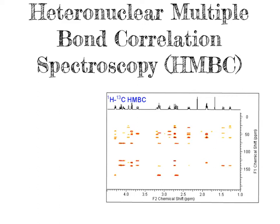In the last couple of videos, we focused on introducing 2D NMR experiments. We looked at the correlation spectroscopy experiment, which evaluated which protons are spin-coupled, and then we looked at the heteronuclear single quantum correlation spectroscopy experiment to evaluate which carbon atoms are directly bonded to which hydrogen atoms.